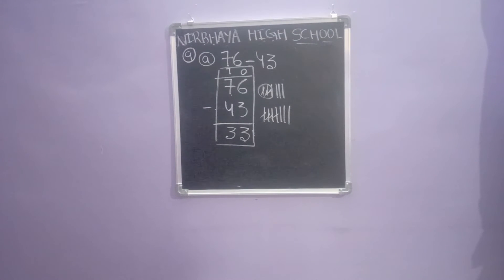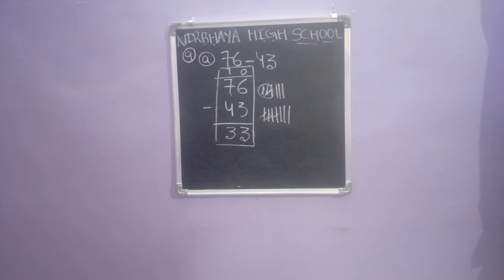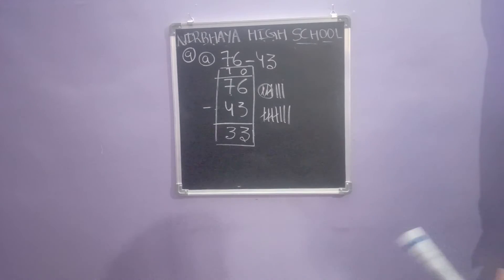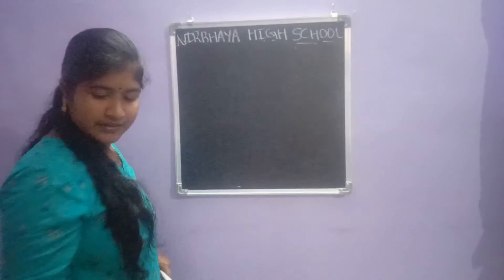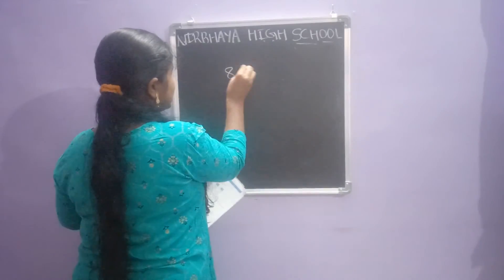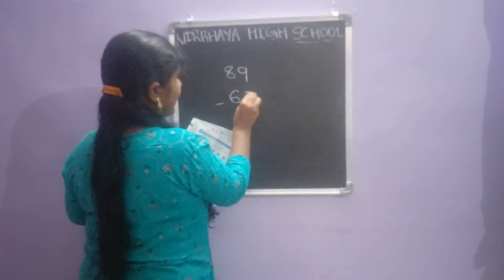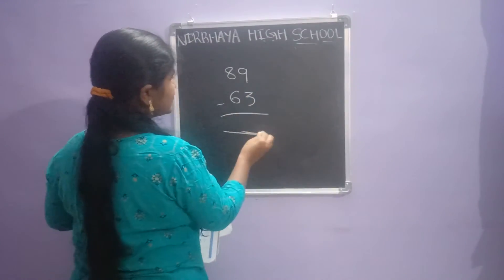That is vertical subtraction. Next one — fill in the blanks. All these are subtractions; we are writing the missing blank. First one: eighty-nine minus sixty-three.